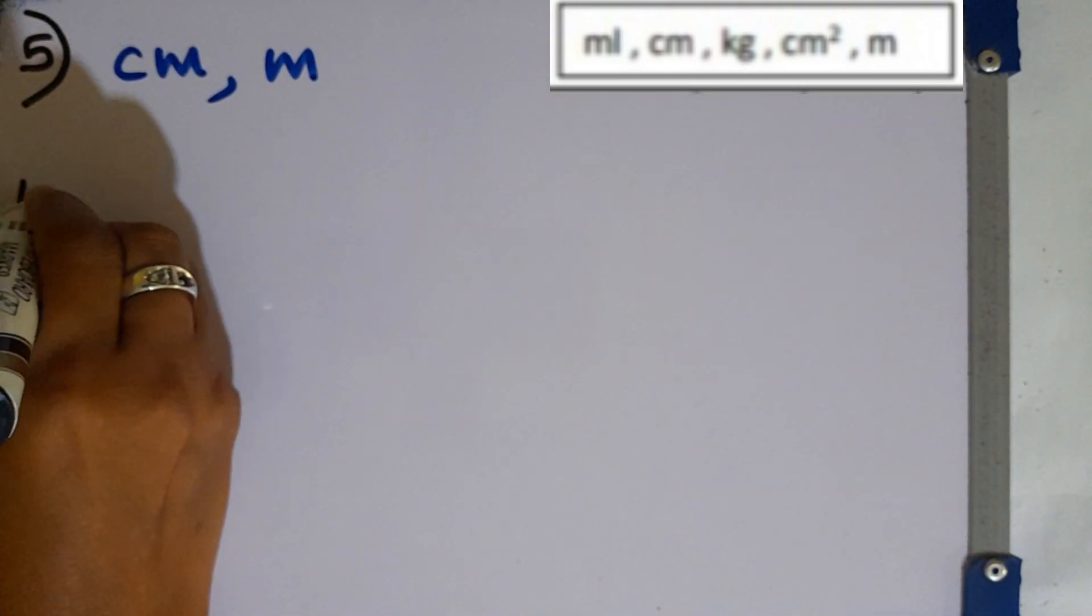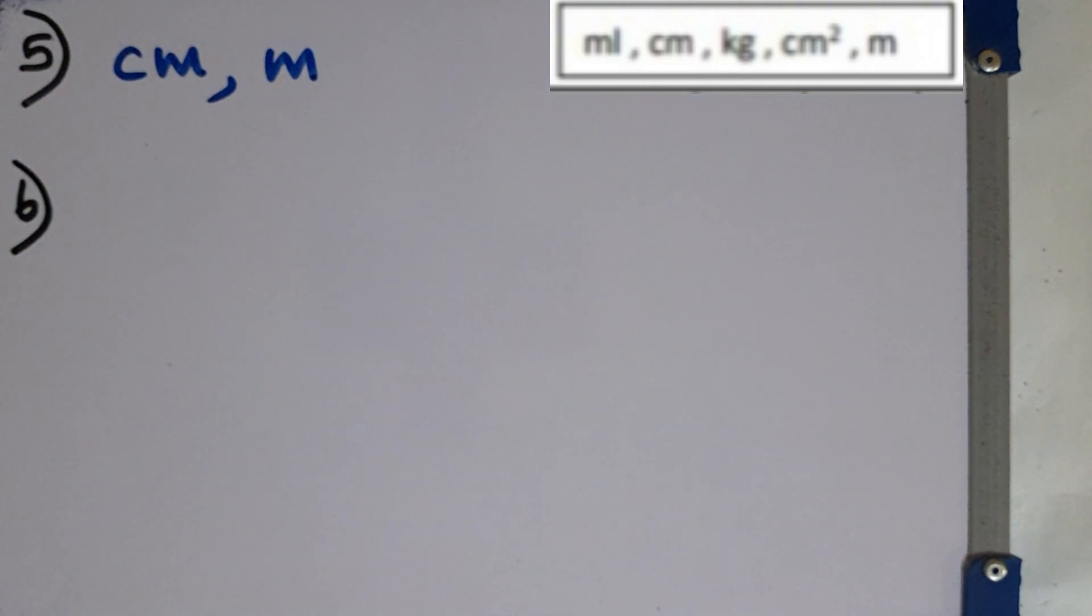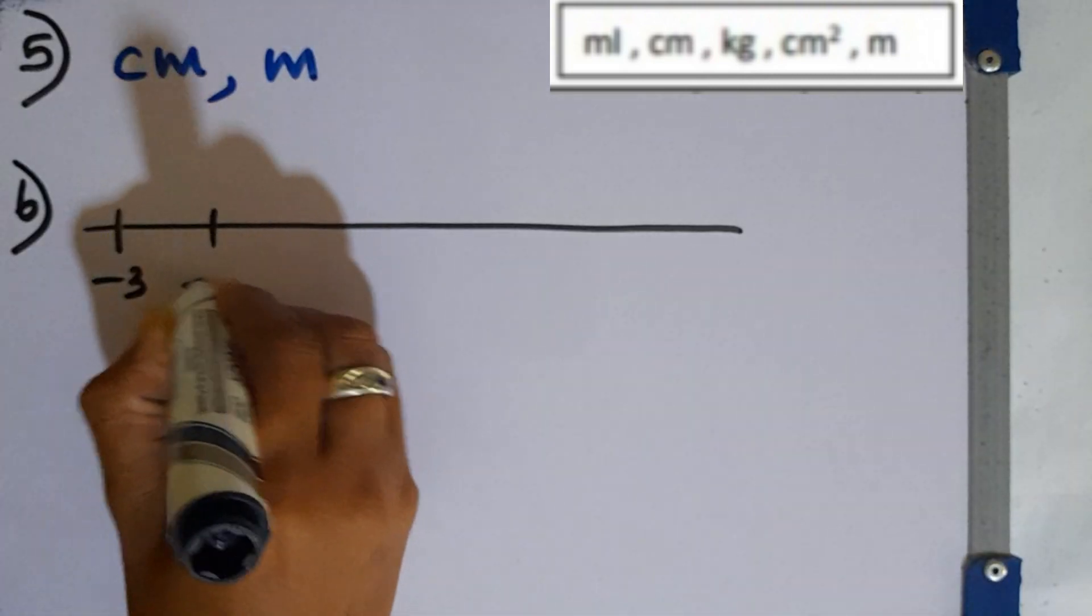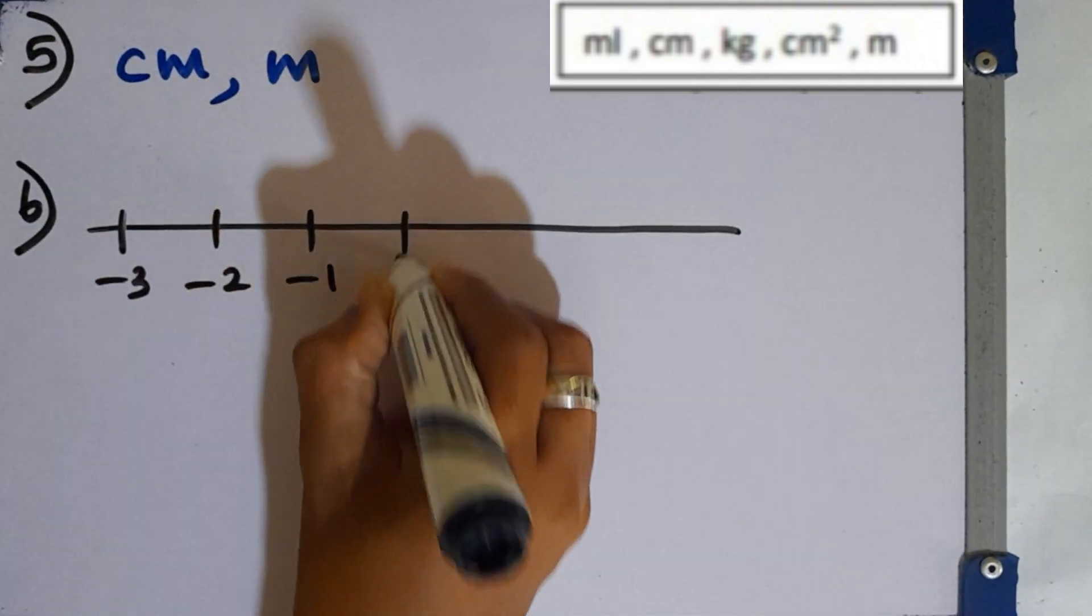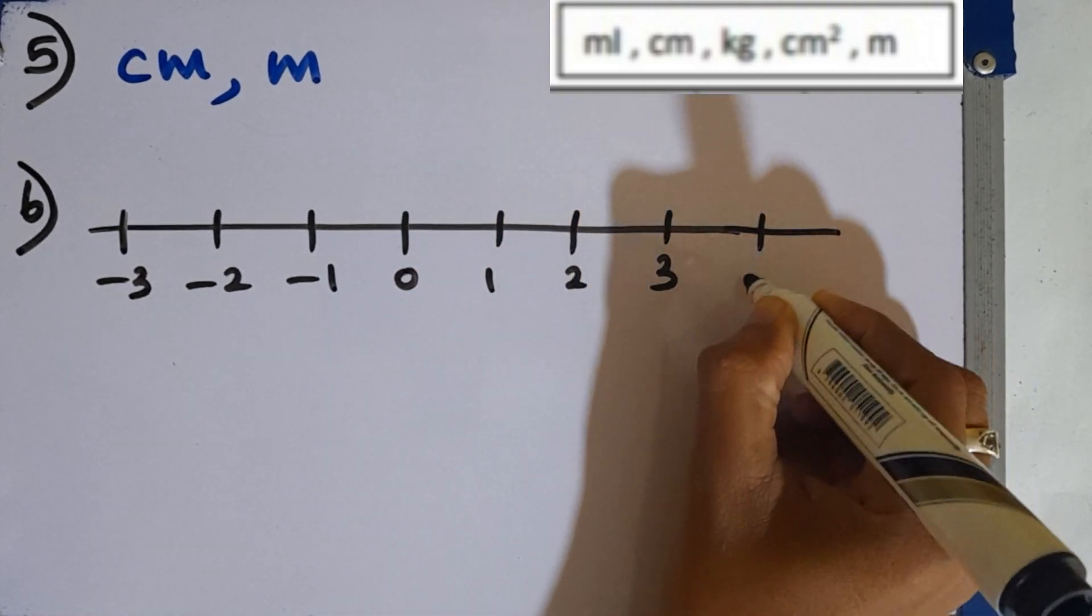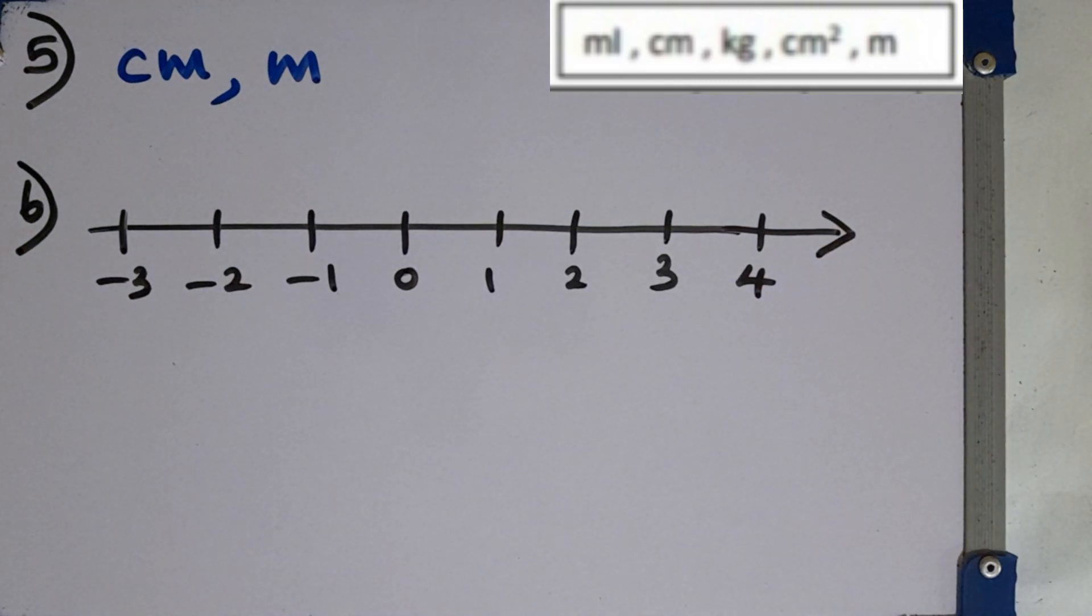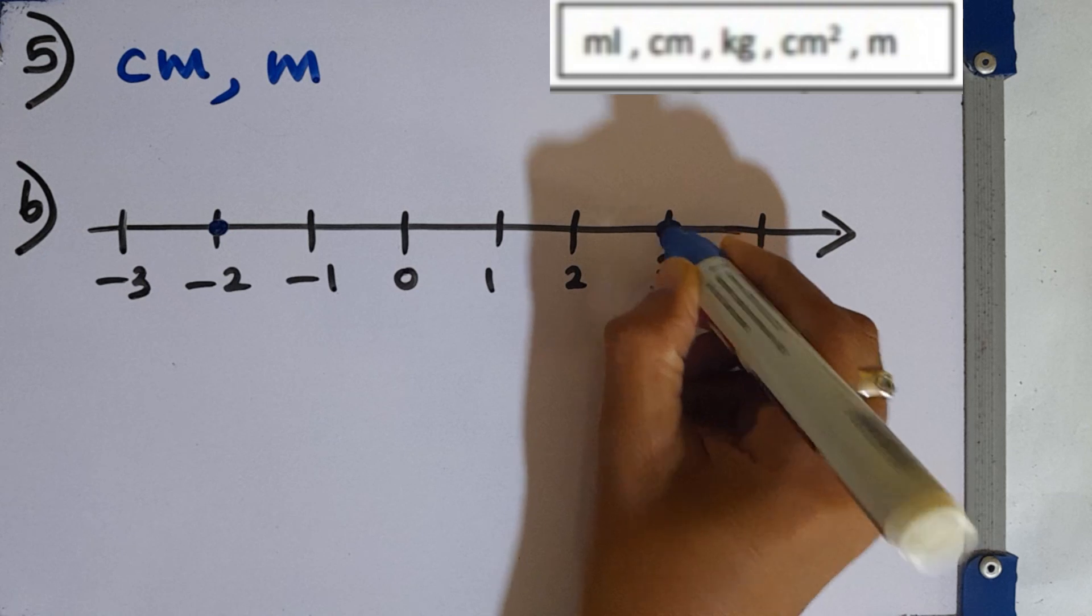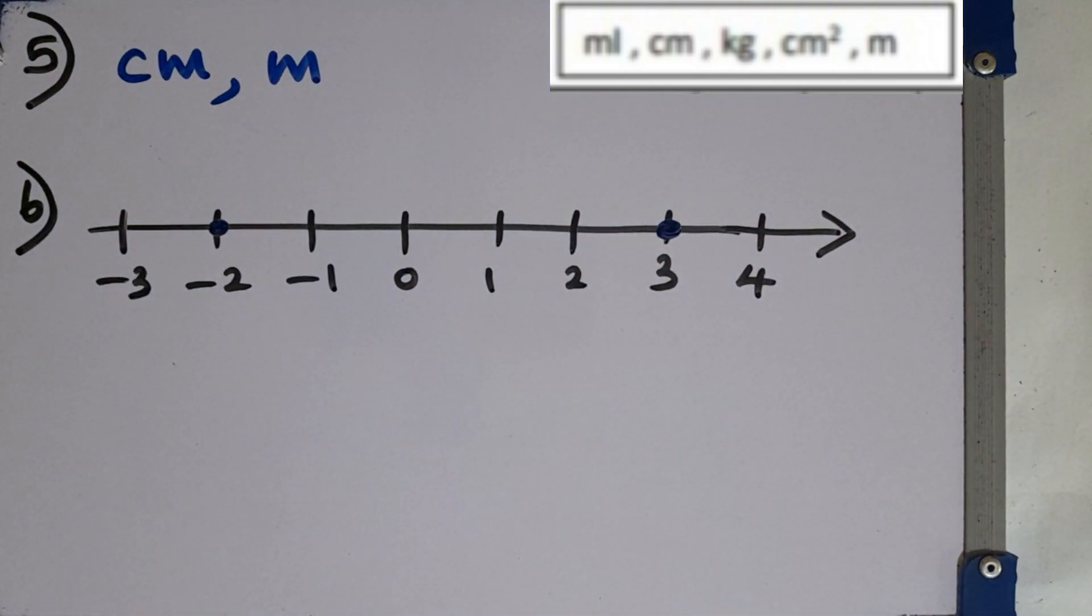Question number 6. You are given a number line here. Number line from minus 3 to plus 4. Mark the numbers minus 2 and plus 3 on the number line. Minus 2 and plus 3 can be marked like this.